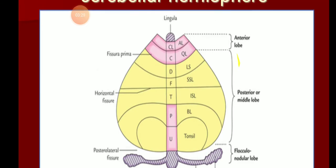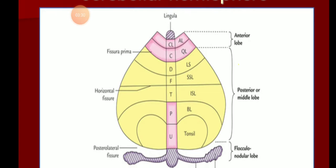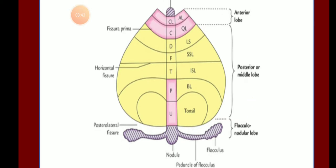So the subdivisions of vermis starting from above: lingula, central lobule, culmen, declive, folium, tuber, pyramid, uvula, and finally the nodule.